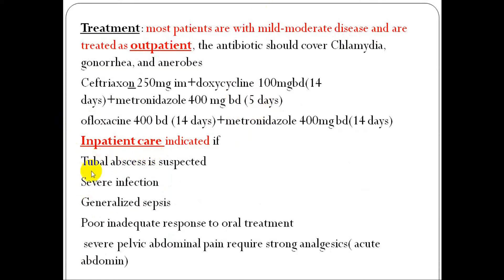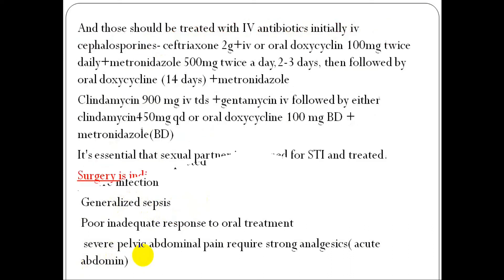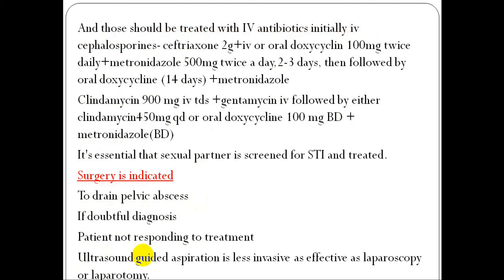Inpatient care is indicated for: suspected tubal abscess, severe infection, tubo-ovarian abscess, poor or inadequate response to oral treatment, and severe pelvic or abdominal pain requiring strong analgesia or acute abdomen. These patients should be treated with IV antibiotics initially — co-amoxiclav and metronidazole — with preparation before surgery if needed.